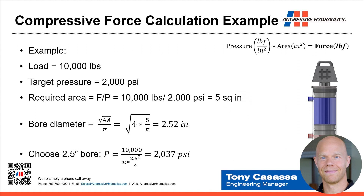If we have a specific example where the load — that dumbbell on top of the cylinder — weighs 10,000 pounds, and our target operating pressure is 2,000 psi, we rearrange our equation and divide force by pressure. 10,000 divided by 2,000 tells us that we need five square inches of bore area to lift 10,000 pounds at 2,000 psi. Using the area of a circle formula and solving for diameter, we need a diameter of 2.52 inches — pretty close to two and a half inches. So we may pick a cylinder with a two-and-a-half-inch bore, and plugging back in, it would actually take 2,037 psi to move that 10,000-pound load.